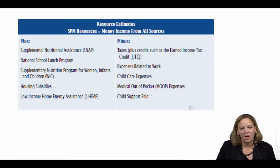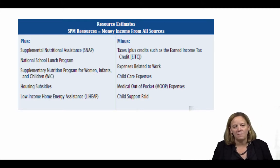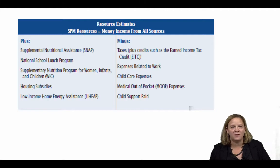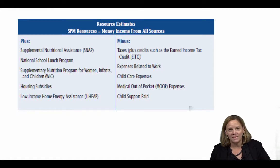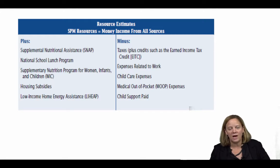From that broader measure of income, the SPM subtracts parts of income that cannot be used to meet basic needs of food, shelter, utilities, or clothing. The main subtractions are taxes or the addition of tax credits, work expenses including childcare, child support paid, and out-of-pocket medical expenses.